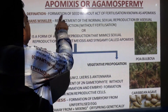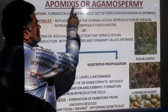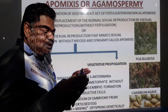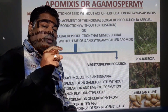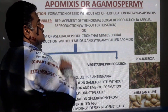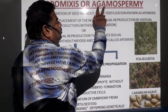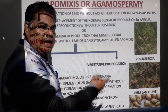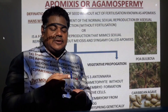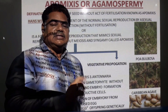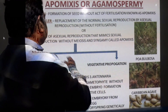We call it Apomyxis. 'Apo' means without, and 'mixis' means mixing — so without mixing of male and female gametes, seed formation takes place from the ovule. We also call it Agamospermi: 'agamo' means gametes do not fuse, and 'sperma' means seed. Formation of seed without the act of fertilization.